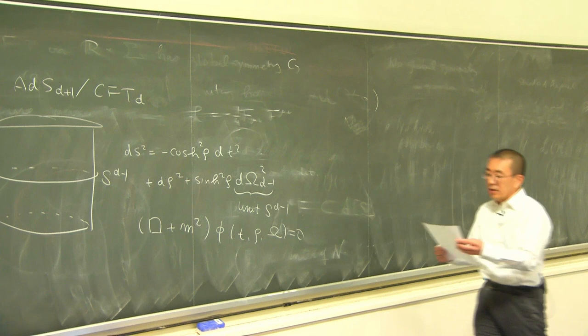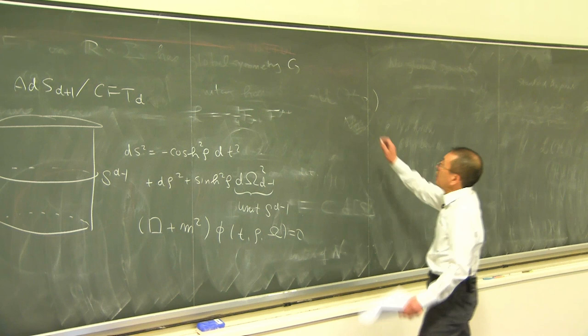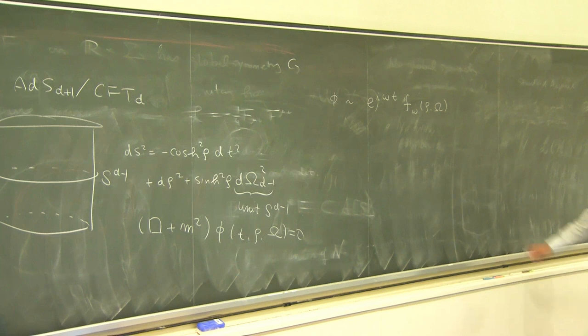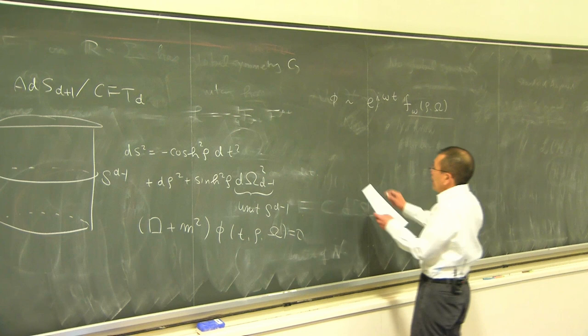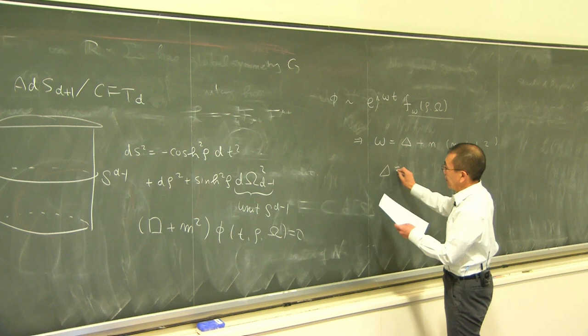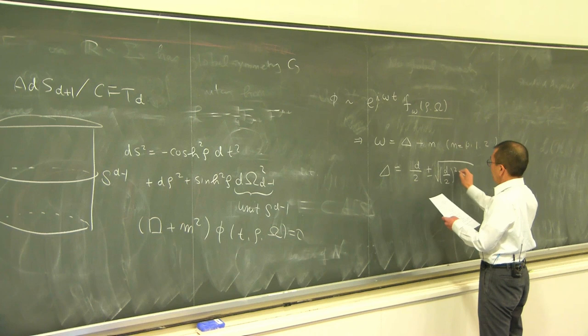We can try to solve this equation. What you do is postulate that phi has some time dependence like that, and then try to solve the differential equation. If you try to find the normalizable mode, you find that omega is equal to delta plus some integer, where delta is related to the mass of the particle.